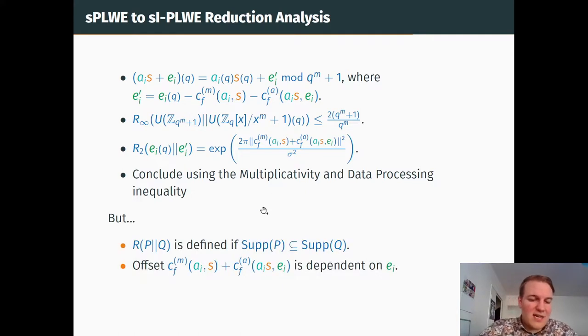But there are two main problems. The first one is that the divergence is defined if and only if we have support inclusion, and that's not the case here. The second problem is that the offset is actually dependent on the noise we have sampled, so we cannot directly apply the previous lemma. But these are all technical stuff that we took care of in the paper. It's a bit more complicated than expected, but in the end, it all works.